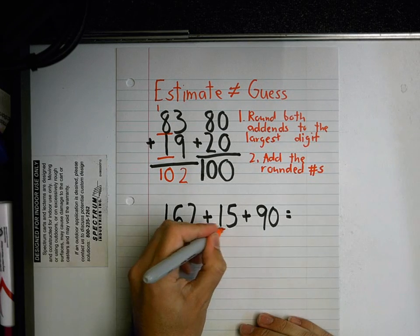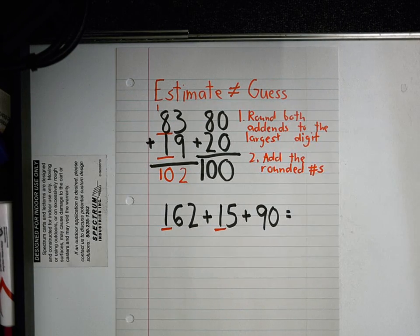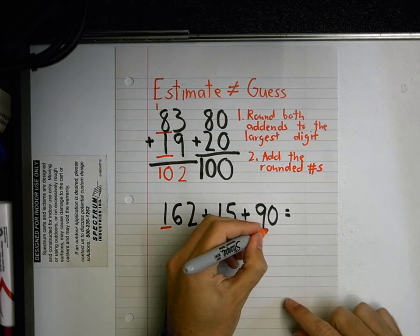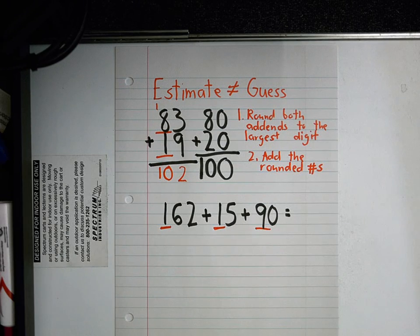And what am I going to round in my next one, 90, Kate? The nine. Yeah, so I'm rounding to the greatest digit every time, the one that's probably gonna be the furthest on the left.